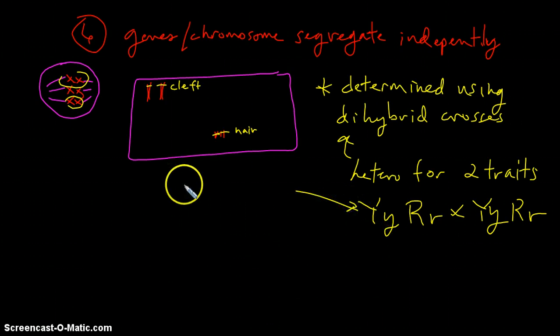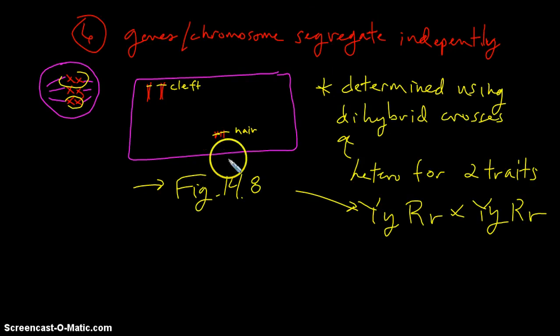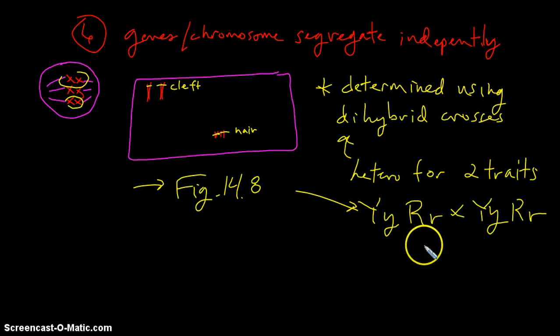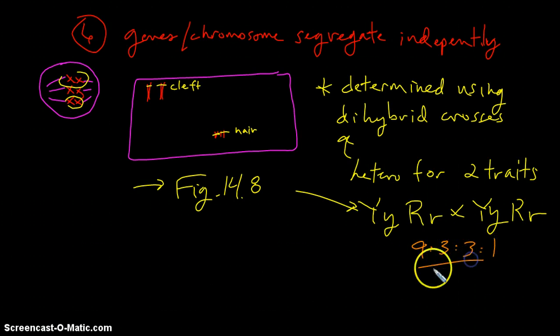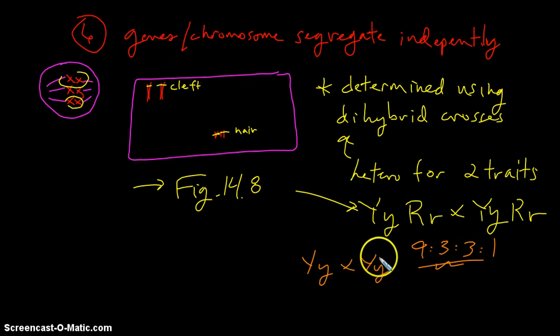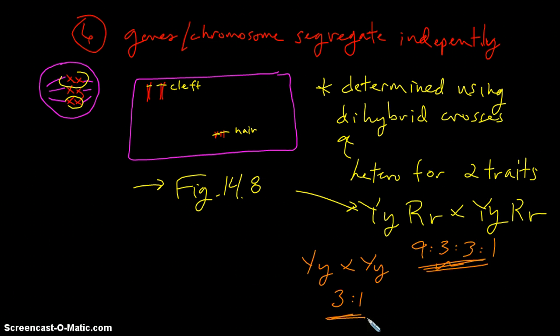This is spelled out in figure 14.8. I would strongly recommend spending some time taking a look at this and reviewing how that information is determined. But just as a quick note, make mention of the fact that if you see a dihybrid cross like this, where both individuals are heterozygous for both genes of interest, you know automatically that the offspring are going to exhibit a 9 to 3 to 3 to 1 ratio in terms of traits that are produced. Likewise, if you see a monohybrid cross where organisms are heterozygous for one gene of interest, then you'll know automatically it's going to be a 3 to 1 ratio. So these are two very frequent ratios and you'll certainly want to be familiar with them.